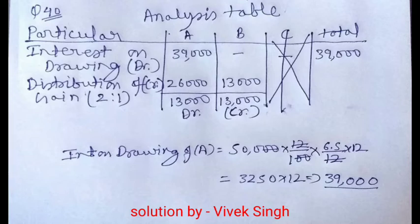Now we have to distribute this gain to the partners A and B in their profit sharing ratio which was 2 is to 1. So the distribution is 26,000 to A and 13,000 to B. Now we have to find out the difference between debit and credit balance. In A column debit balance is 39,000 and credit balance is 26,000, so there is a difference of rupees 13,000. The 39,000 is more than 26,000 and is a debit balance, so 13,000 is known as a debit balance. In partner B there is only a credit balance of rupees 13,000.